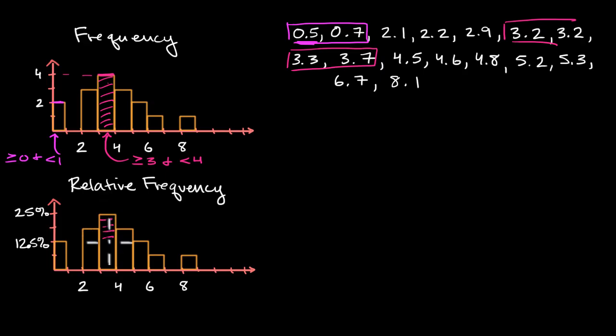And this one right over here, notice, instead of the height being four for four data points, it's now twenty-five percent. But these are saying the same thing. Four out of the sixteen data points fall into this category. Four sixteenths is one fourth, which is twenty-five percent.